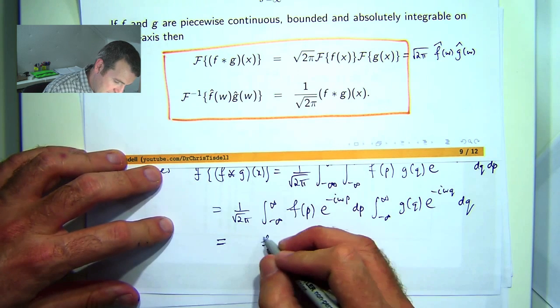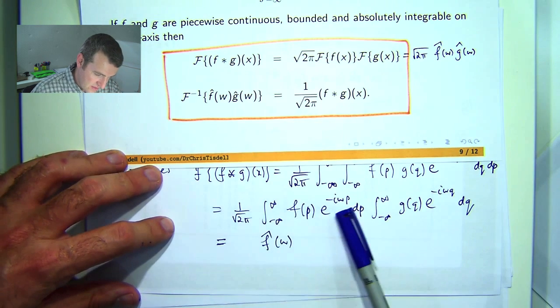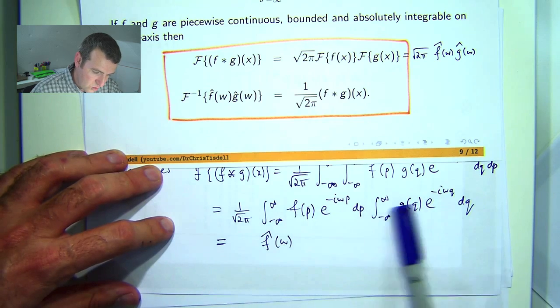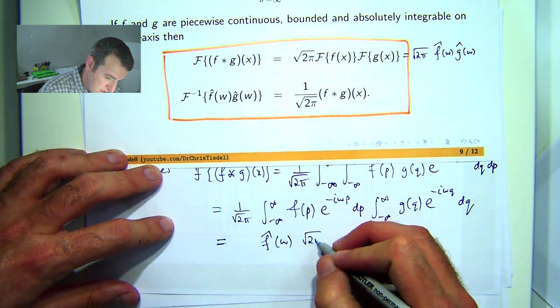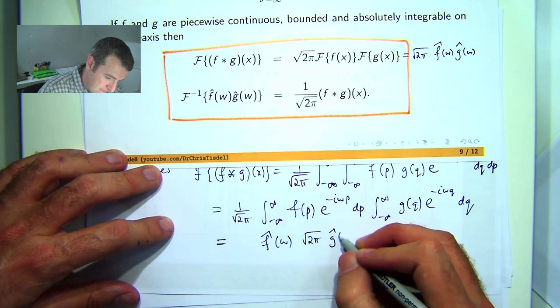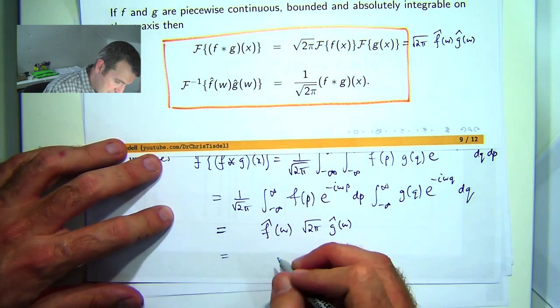So I've got f hat of w. That's that. And this is almost g hat, but it's g hat times root 2 pi. So this then is just.